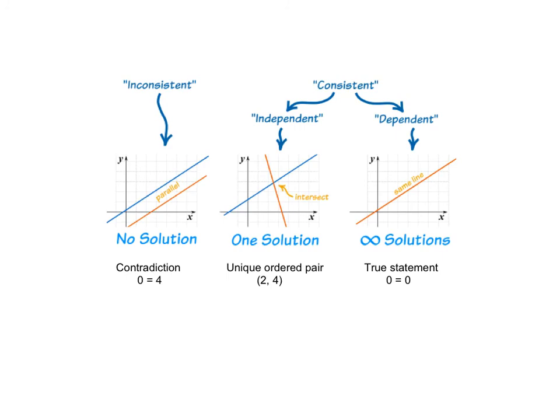If we have a system that is consistent, it has at least one solution. So a consistent and independent system has exactly one solution. That is the intersection point on the graph, and when we solve it, we get a unique ordered pair that works in both equations.